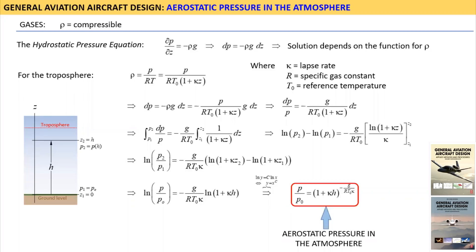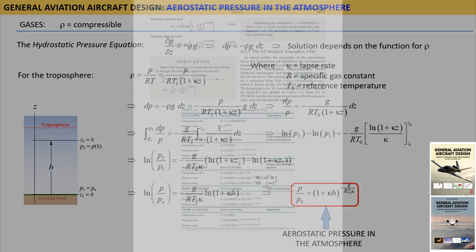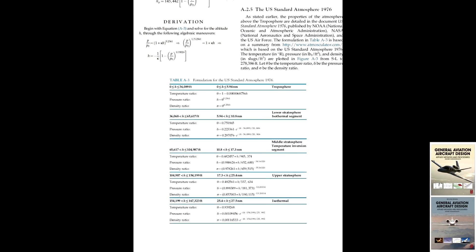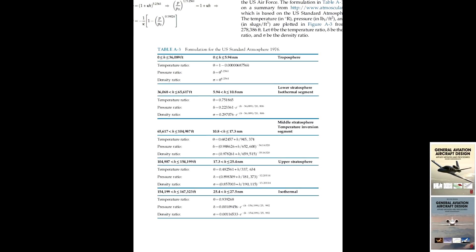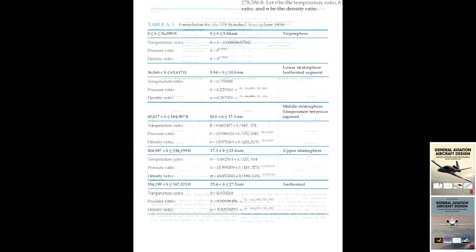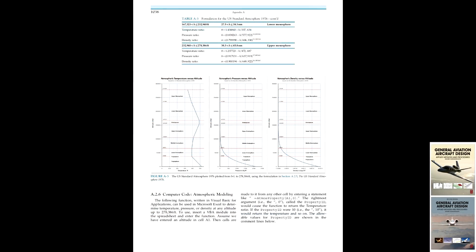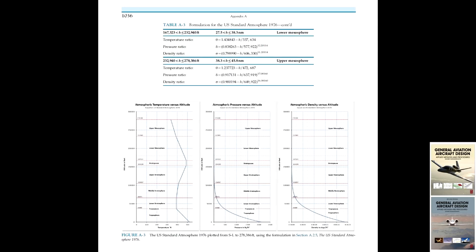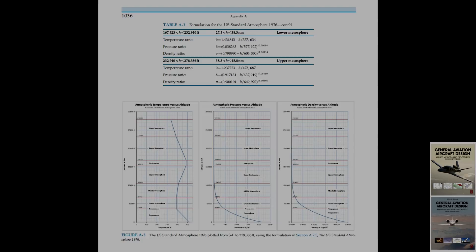For instance, in the stratosphere the temperature is constant. Note that the formulation for the US Standard Atmosphere 1976 is given in Table A3 in Appendix A of both editions of the book. It allows the user to estimate atmospheric properties up to about 278,000 feet and approximately 84 kilometers.